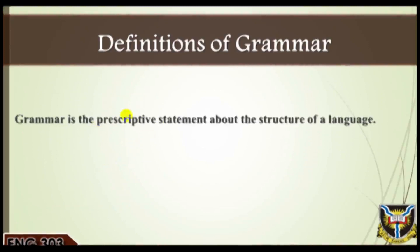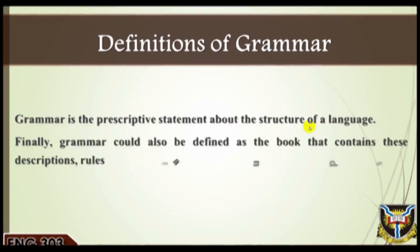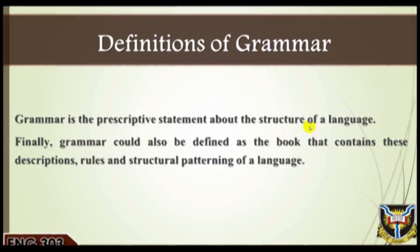Three: grammar is the prescriptive statements about the structure of a language. In this sense, a group of knowledgeable users of the language adjudicates as to what is grammatical and what is not. They dictate what is elegant in language usage and encourage language users to follow their guidelines. Such descriptions dictate the choice between forms like 'it is I' and 'it is me.'